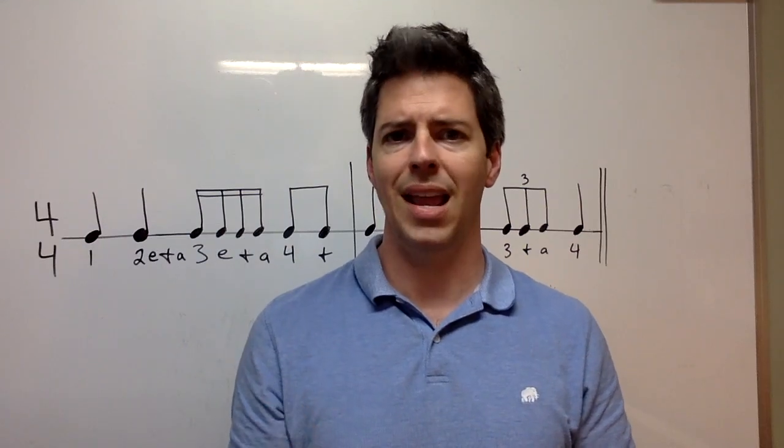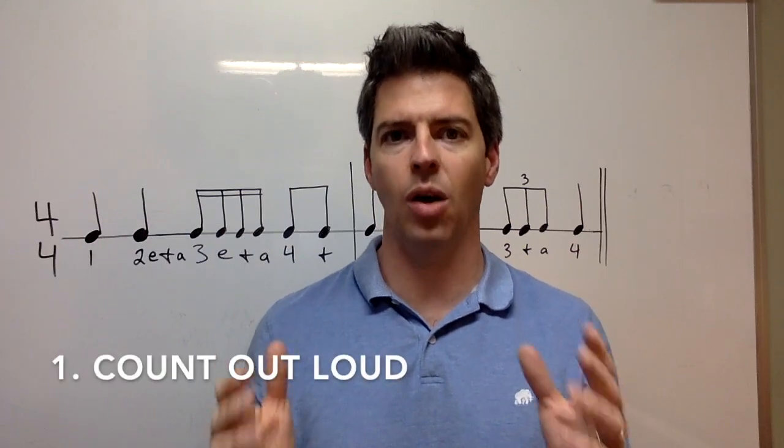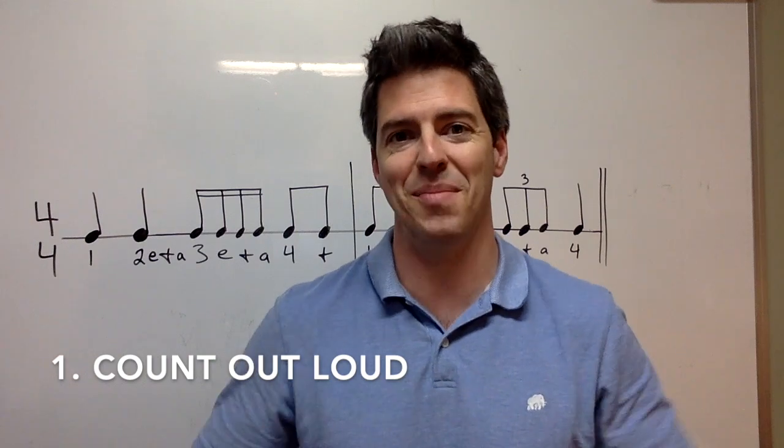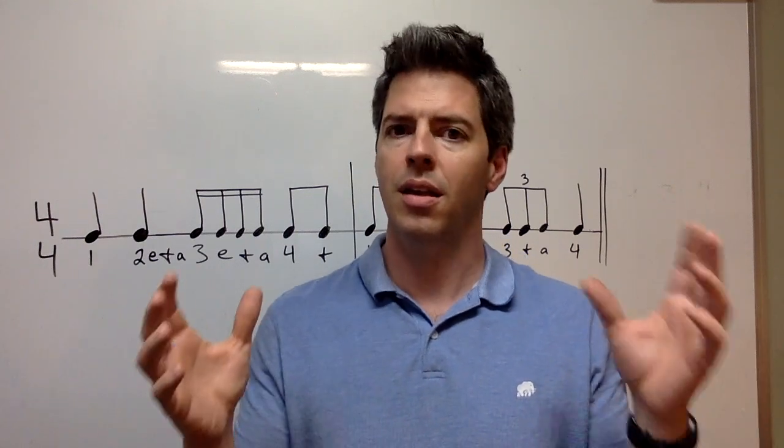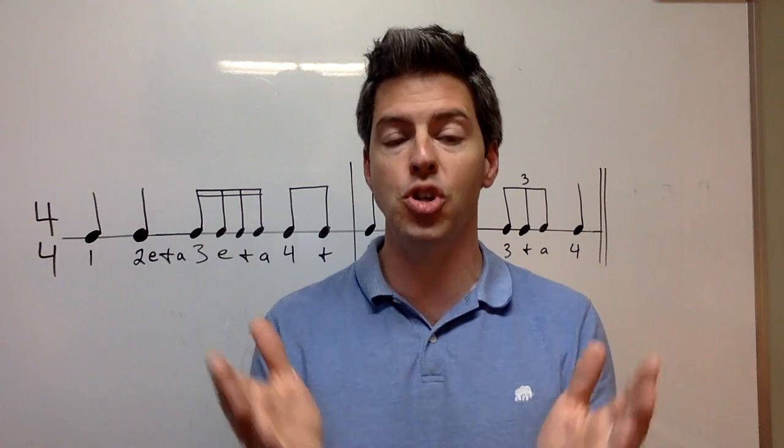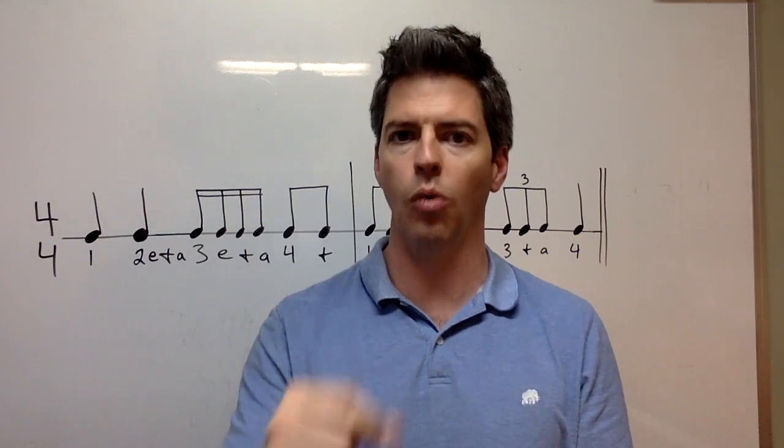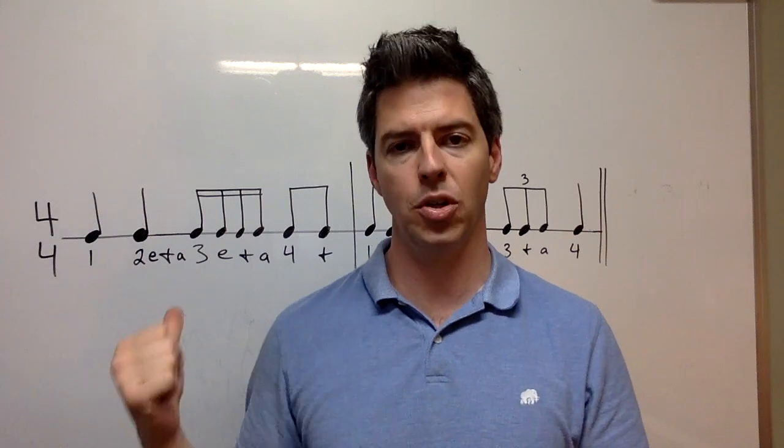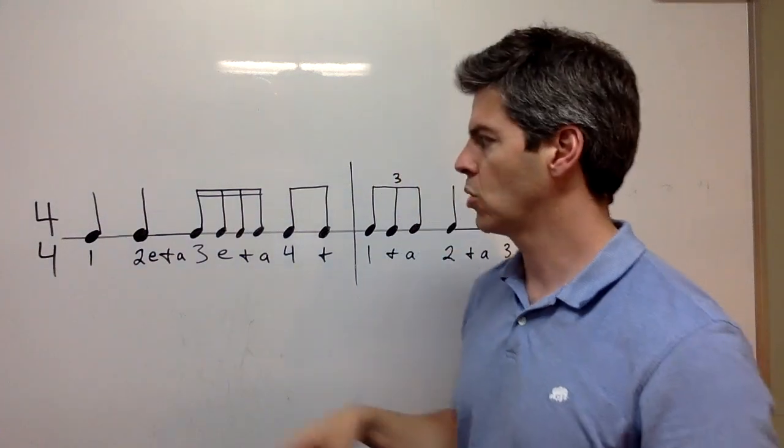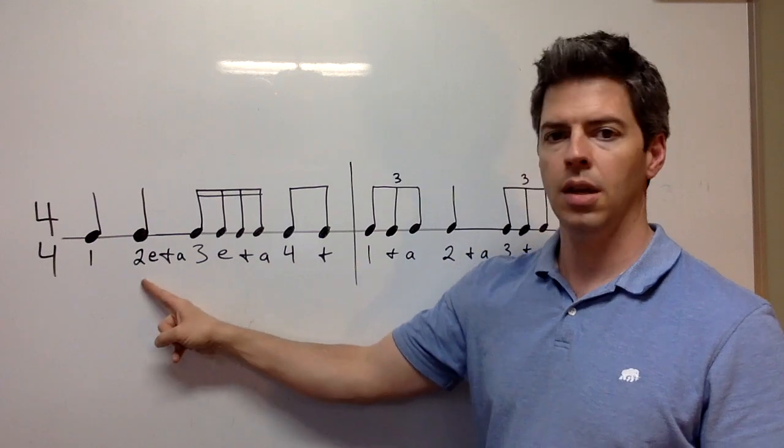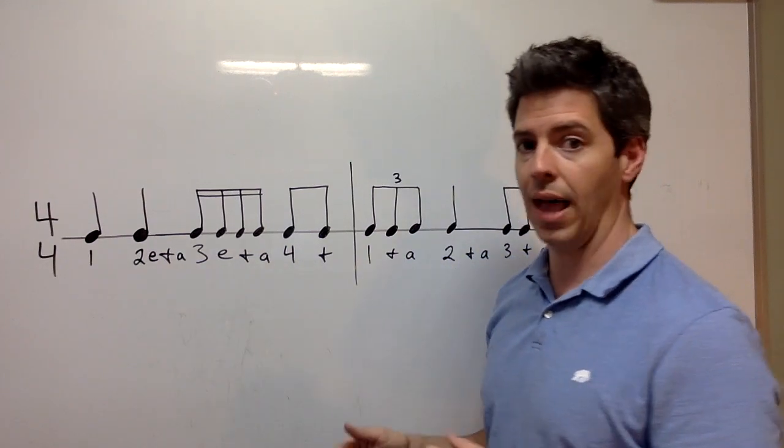Technique number one is very simple. It's counting out loud. Now, if you're a trumpet player, that can be difficult, but for a guitar player or piano player, this is no problem, and you should absolutely do it. Counting out loud helps my students improve their rhythm. So I've written out this rhythm here, and I've written the counts, and so when you play, you should count out loud.